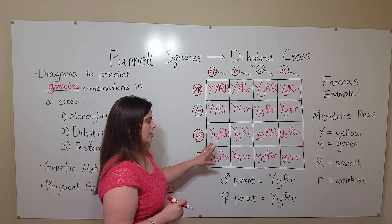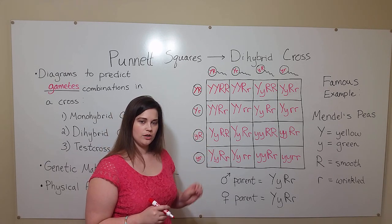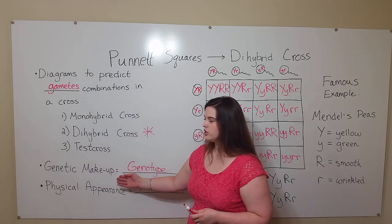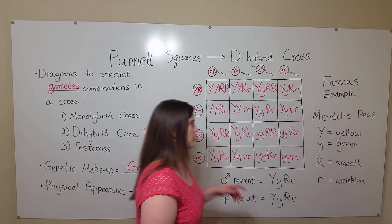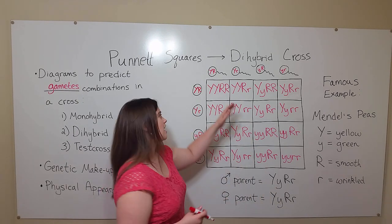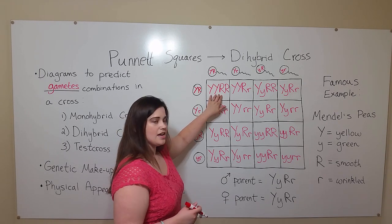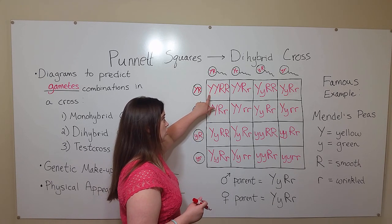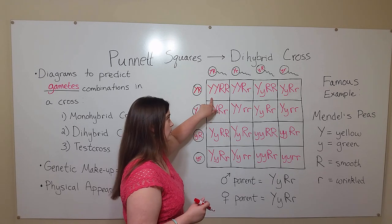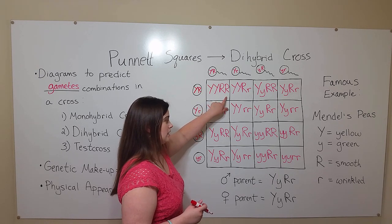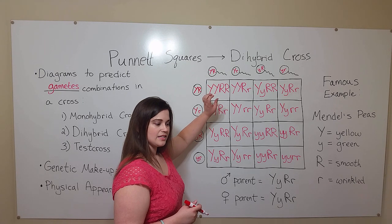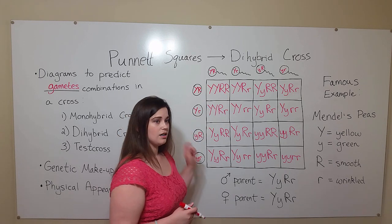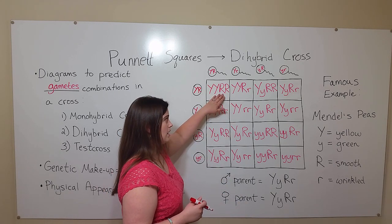Now let's take a look at the offspring thinking in terms of genotype and phenotype. Remember that genotype is the genetic makeup. For example, the genotype for this offspring is that it is homozygous dominant for both alleles — it has two of the dominant alleles for yellow color and two of the dominant alleles meaning smooth texture. Its genotype would be capital Y, capital Y, capital R, capital R. Its phenotype would be yellow and smooth.